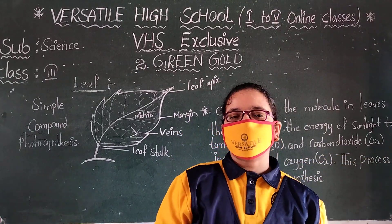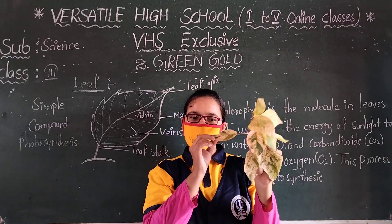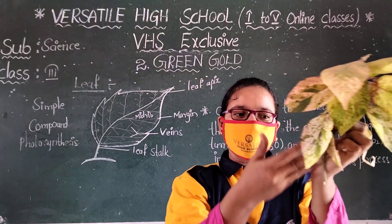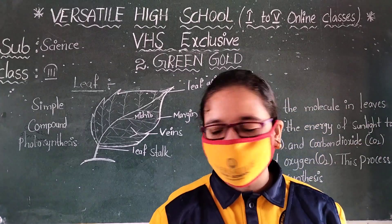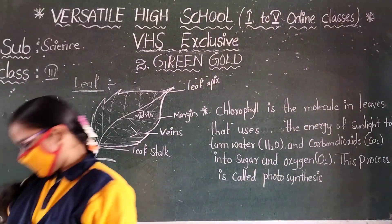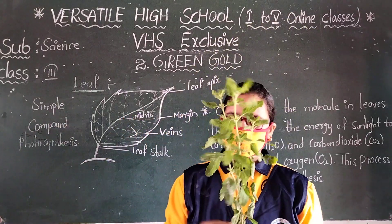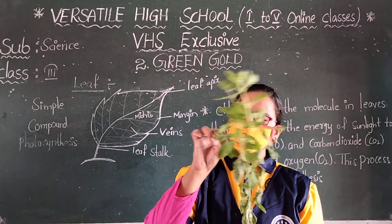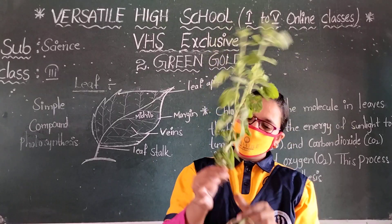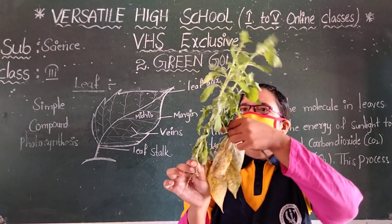Leaves are the powerhouse of plants. This leaf — once you see this plant, this leaf is the powerhouse of the plant. Once you see: this is the roots, this is the stem, this is the leaves.